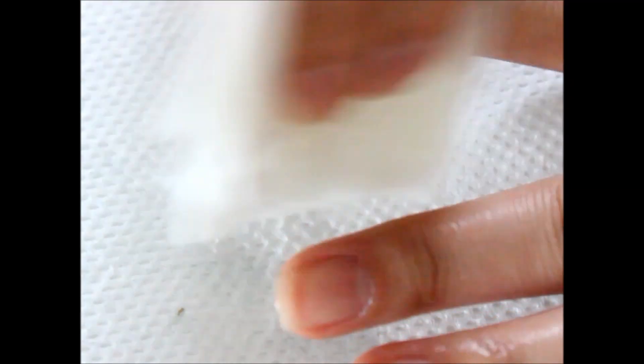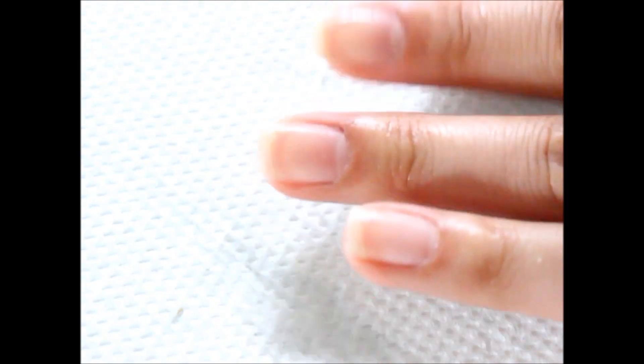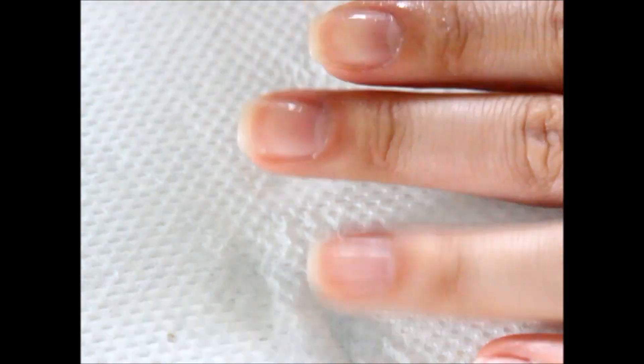So after my cuticles have been pushed back, I'm going to use a soapy damp rag to remove all the excess cuticle gel and then use a dry cloth to dry my nails thoroughly before I prepare them for some pampering.